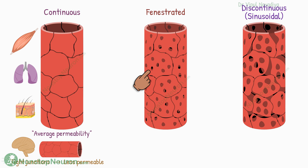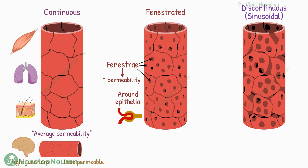In fenestrated capillaries, the endothelial cells are thin and have perforations called fenestrae. This increases the permeability of the capillary. They are seen around the epithelia. For example, the glomerular capillaries, close to the epithelial cells of Bowman's capsule in the kidney, are fenestrated.